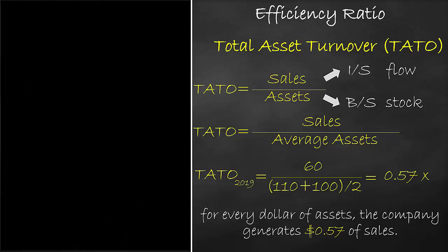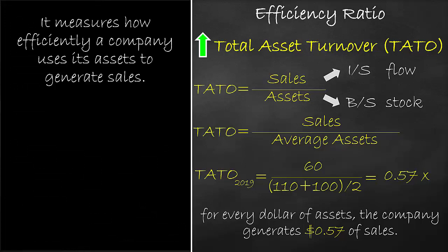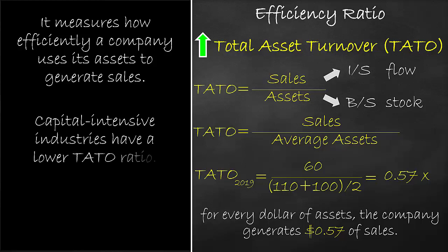The higher the total asset turnover, the better. It means that for every dollar of assets, the company generates $0.57 of sales, measuring how efficiently a company uses its assets to generate sales. Capital-intensive industries have a lower TATO ratio and labor-intensive industries have a higher TATO ratio.